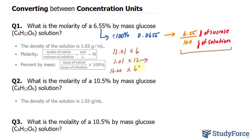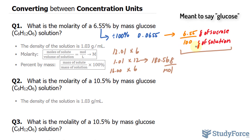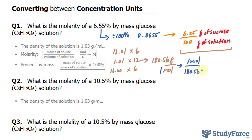If you calculate this correctly — multiply and then add for each element — you should end up with 180.56 grams per mole. What I'll do next is multiply this ratio with 6.55, because we learned that there is 6.55 grams of glucose for every 100 grams of solution. So I'll take 1 mole over 180.56 grams, and multiply it by 6.55 grams of glucose. This unit will cancel out, and now we've found the moles of glucose.